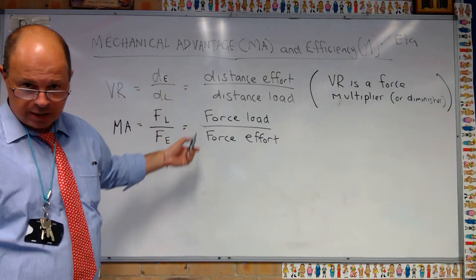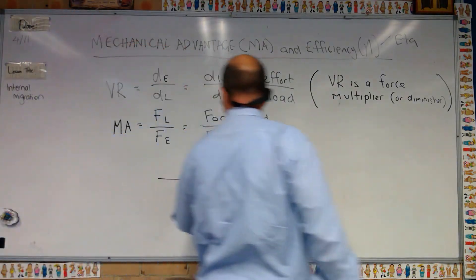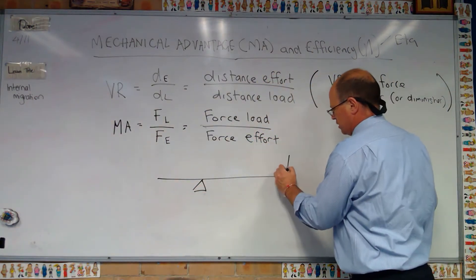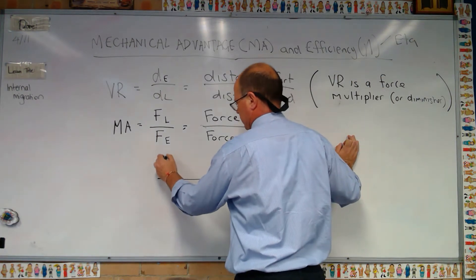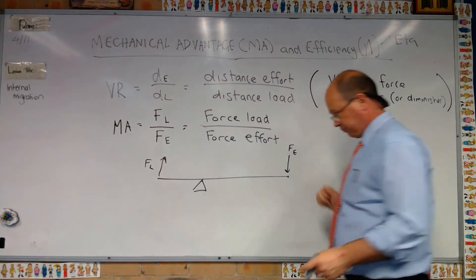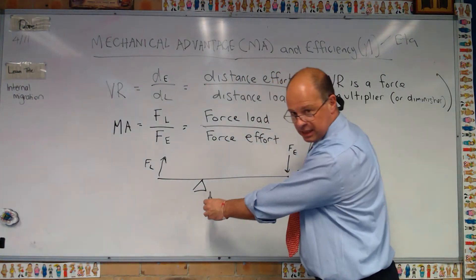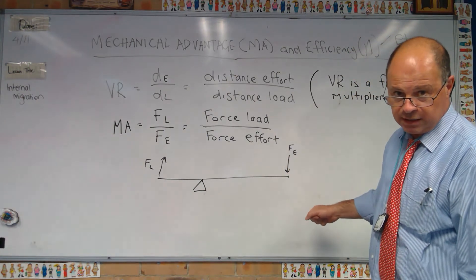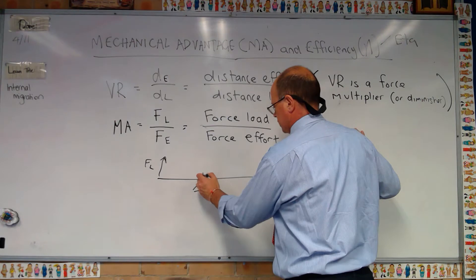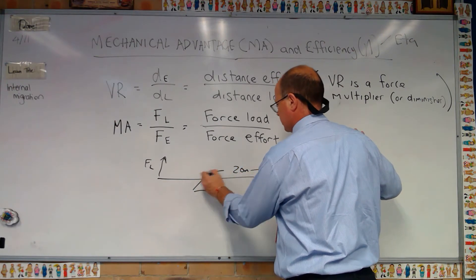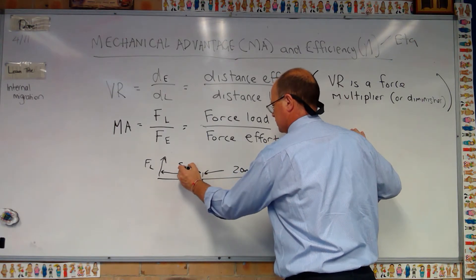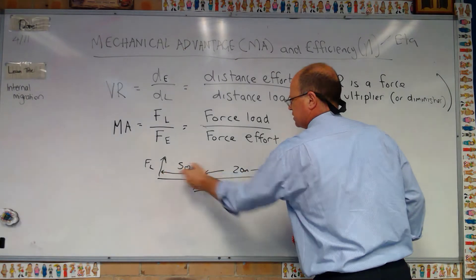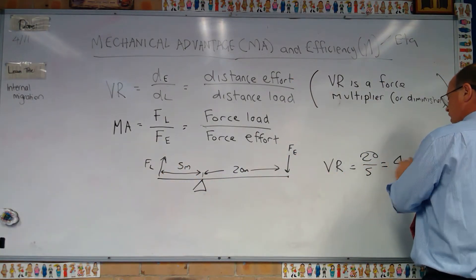To explain that a little better, look at a class one lever where the fulcrum is to one side. You have the force of effort on one side and the force of load on the other. Because the effort arm is larger than the load arm, VR is going to be much greater than one. If the effort arm is 20 meters and the load arm is 5 meters, VR equals 20 over 5, which gives a VR of 4.